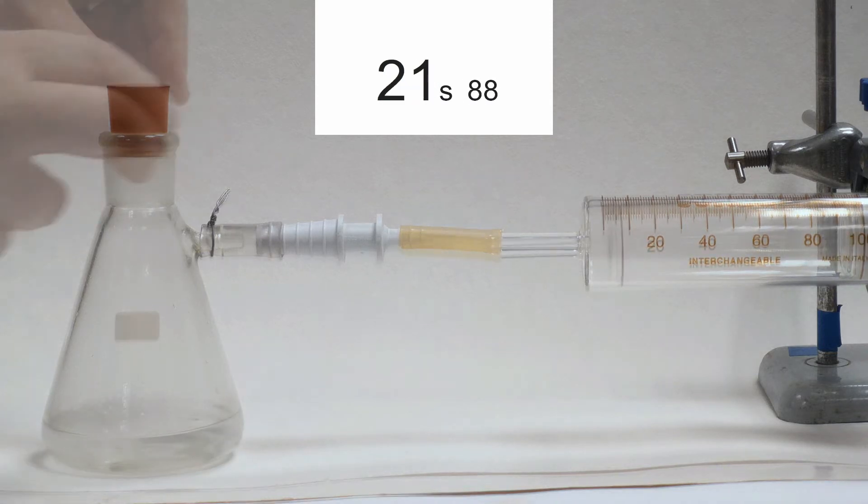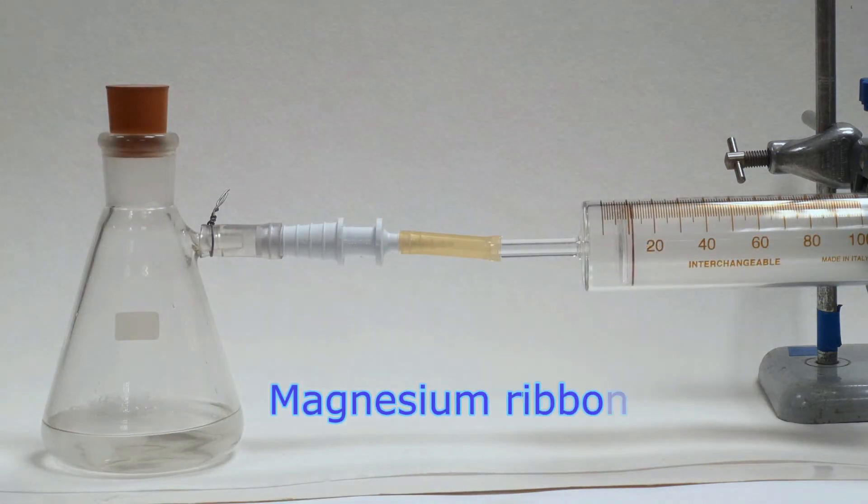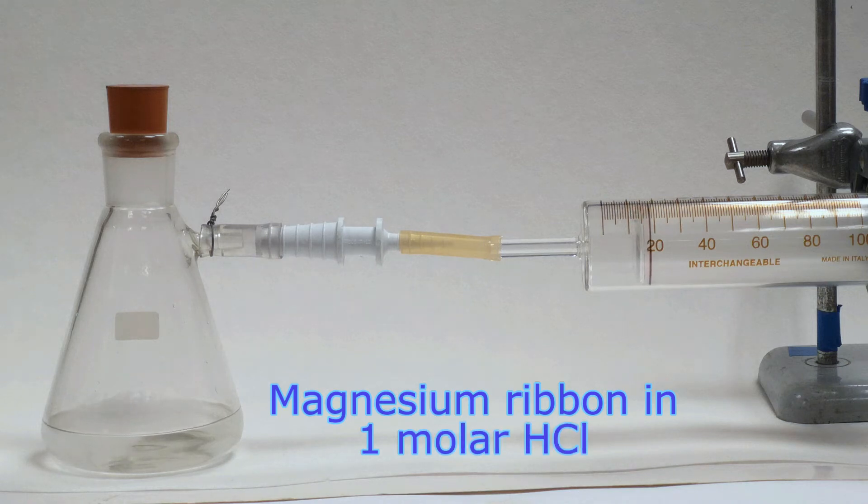With this 2 molar acid, you can see it takes about 17 seconds to produce 80 cubic centimetres of gas.